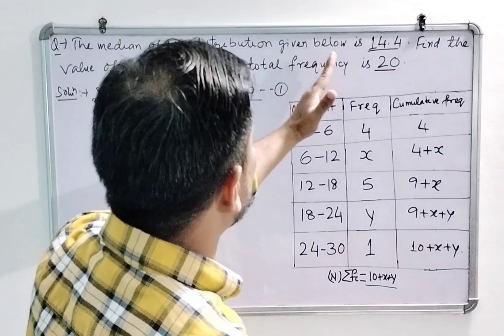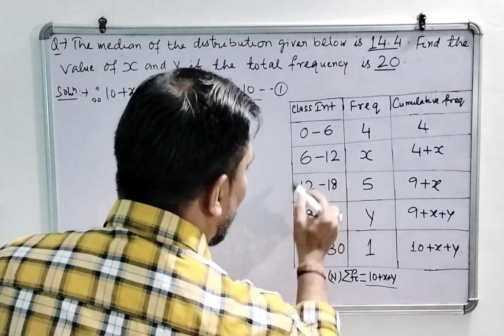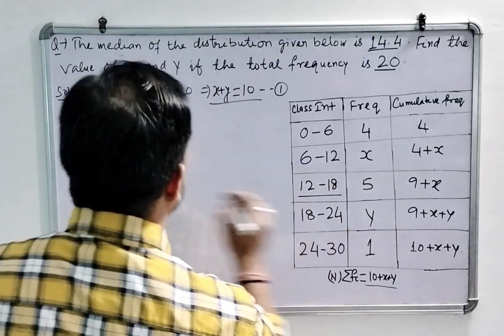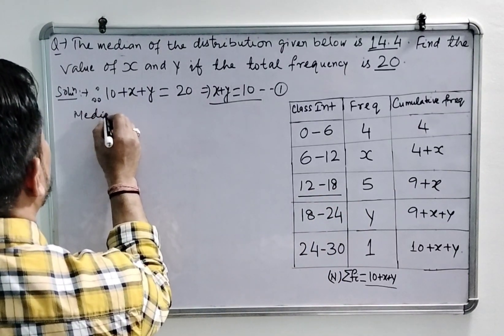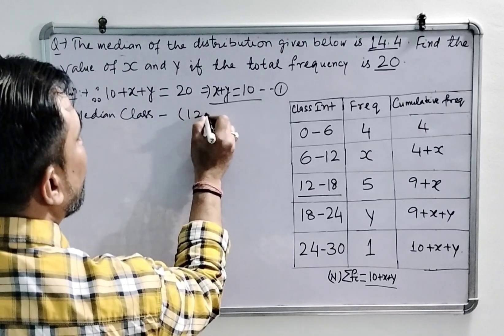Also, the median of the distribution is given as 14.4, and we find here that it is falling in the class interval of 12 to 18. So this class interval will become the median class. For this table, the median class is 12 to 18.